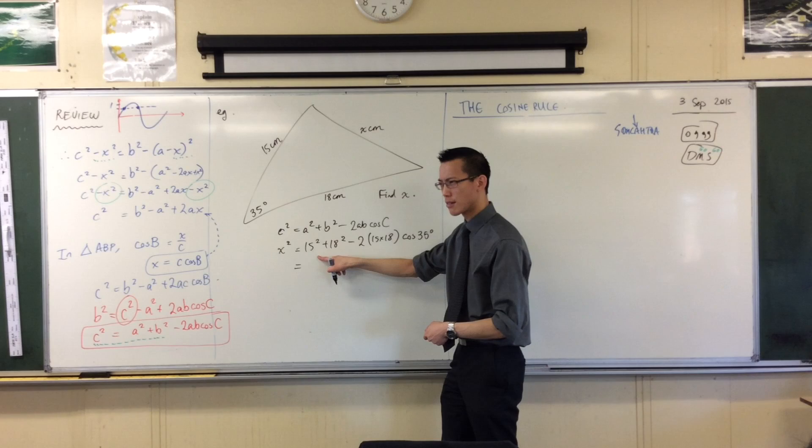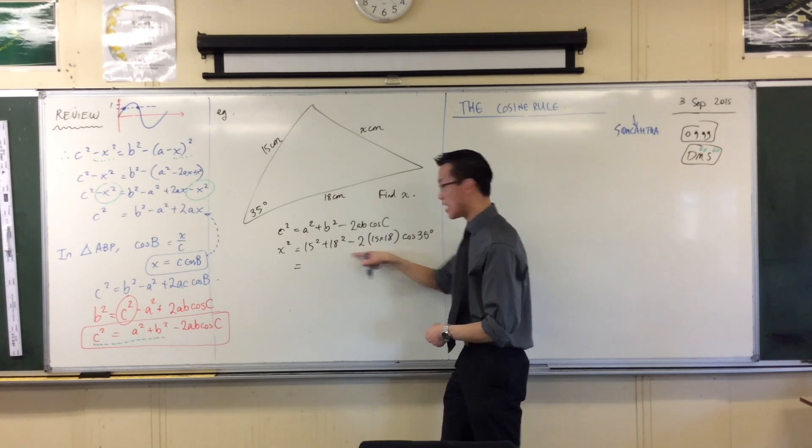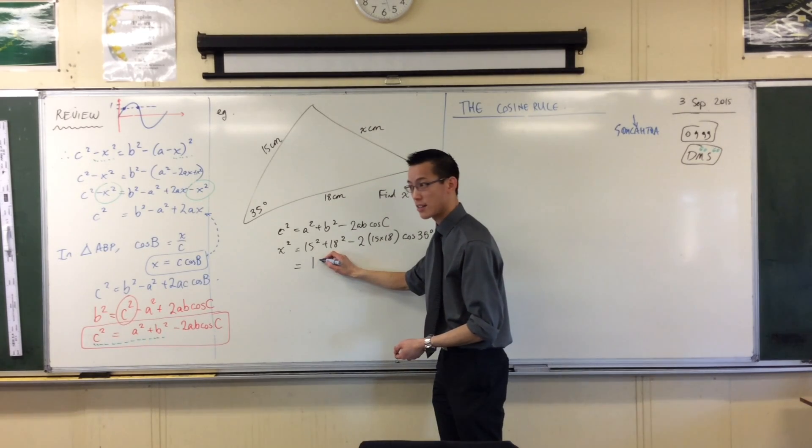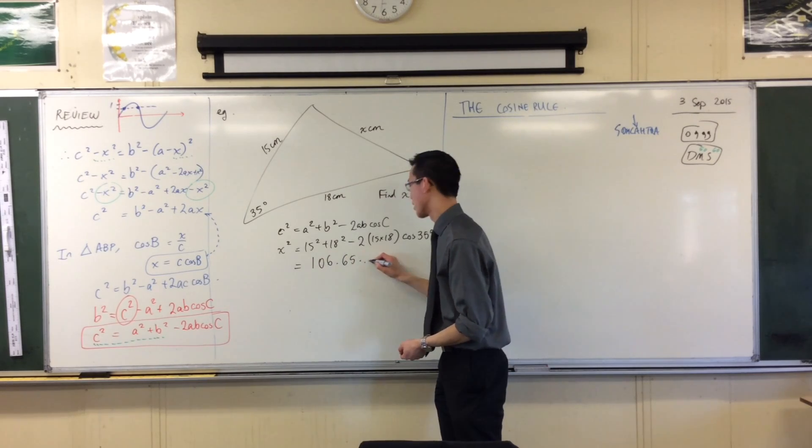106? Yeah. Have you done the next step? 15 squared plus 18 squared is 549. Yeah. And then have you done this bit? Yeah. Alright, I get you. So, 100 and 6.65. Okay, cool.